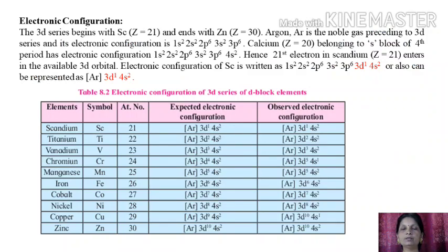Now the next important question in board exams is: write the electronic configuration of the 3d series. The 3d series begins with scandium with atomic number 21 and ends with zinc with atomic number 30. Argon with atomic number 18 is the noble gas preceding the 3d series, and its electronic configuration is 1s² 2s² 2p⁶ 3s² 3p⁶. Calcium, having atomic number 20, belongs to the s-block of the 4th period and has electronic configuration 1s² 2s² 2p⁶ 3s² 3p⁶ 4s².